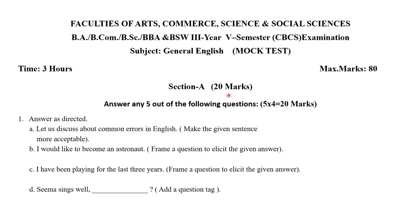Section A comprises 20 marks and you have to answer five questions. The first question: answer as directed. Let us discuss about common errors in English — make the given sentence more acceptable. There is an error in the sentence; you have to find out the error and rewrite it. The error is there is no need of 'about': 'Let us discuss common errors in English' is the correct sentence.